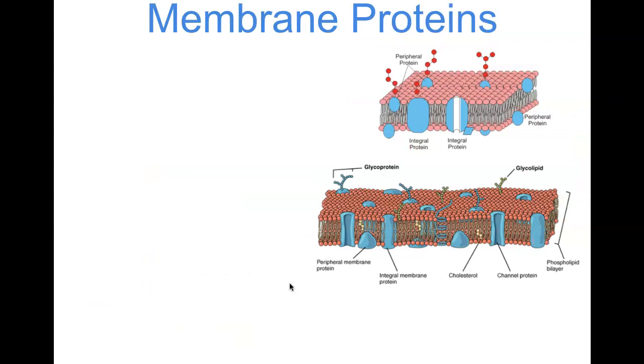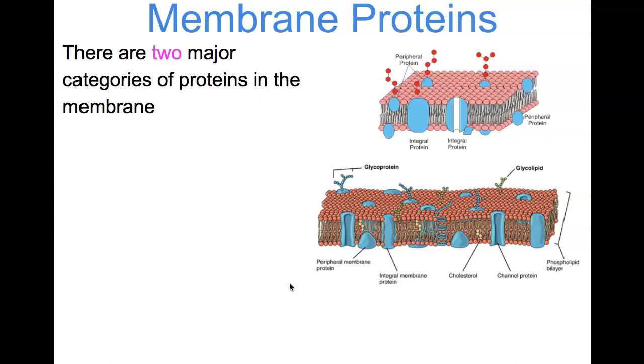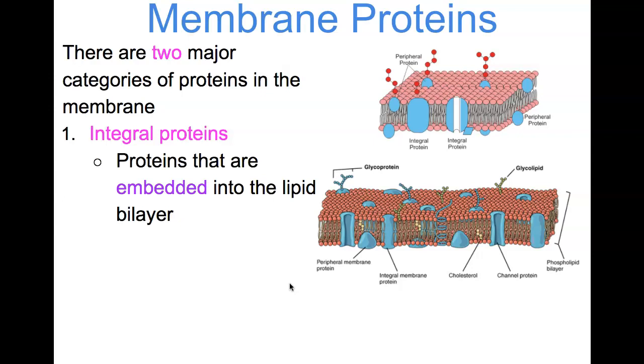First, we can take a look at membrane proteins. There are two major categories of proteins in the membrane. You're going to have integral proteins and peripheral proteins. Integral proteins are the proteins that are going to be embedded into the lipid bilayer, so those are going to span across the membrane. Here you can see some examples of integral proteins, how they actually span across an entire membrane space. These are also known as transmembrane proteins. They are amphipathic in nature.